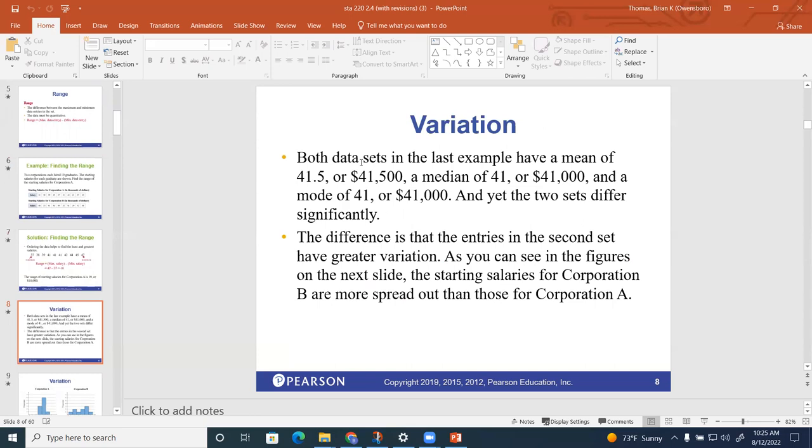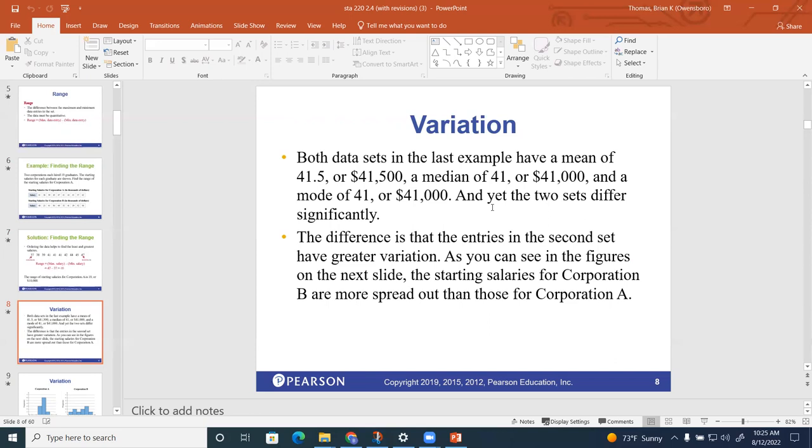So we get into variation. Both data sets in the last example have a mean of 41.5 and a median of 41 and a mode of 41. But if you look at the data, the two sets differ quite a bit. So what do we mean by that?